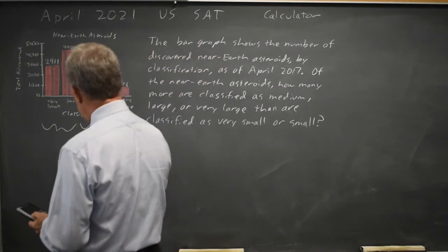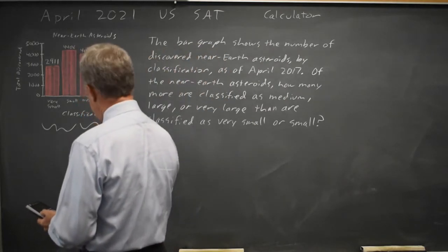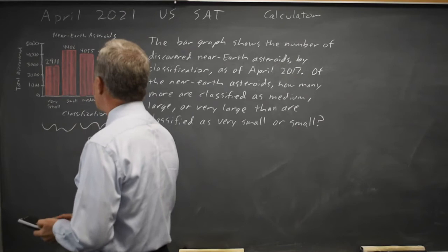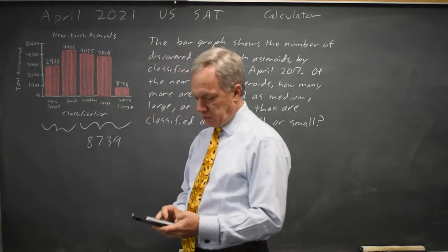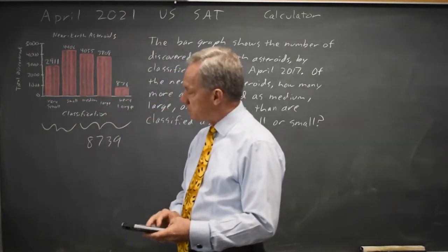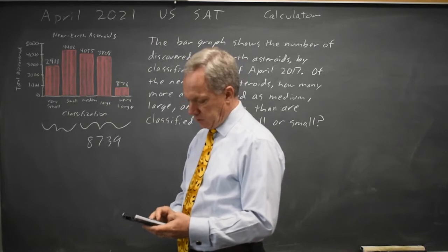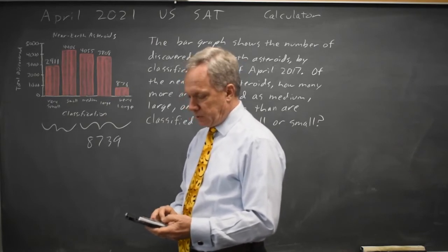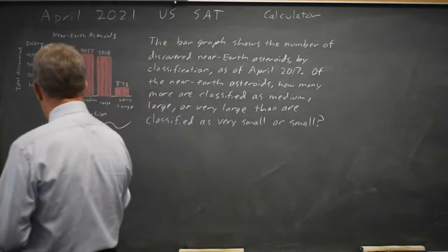And that is 8739. If I total the numbers for very small or small, that's 4406 plus 2911 is 7317.